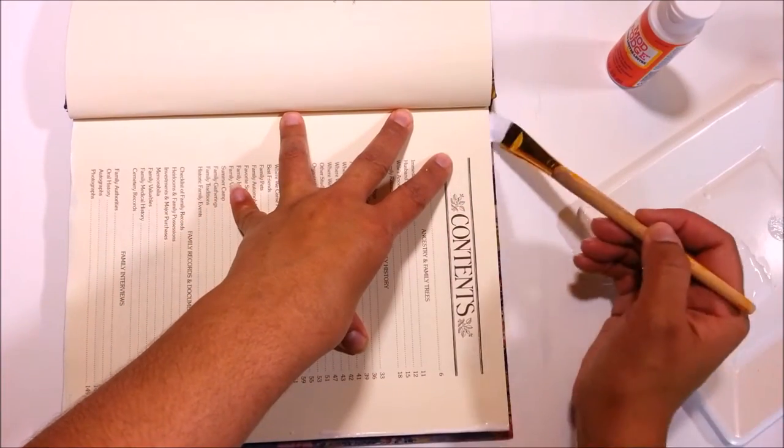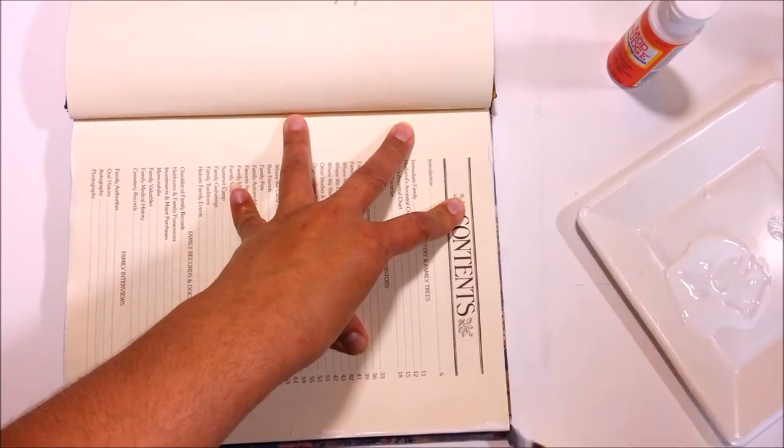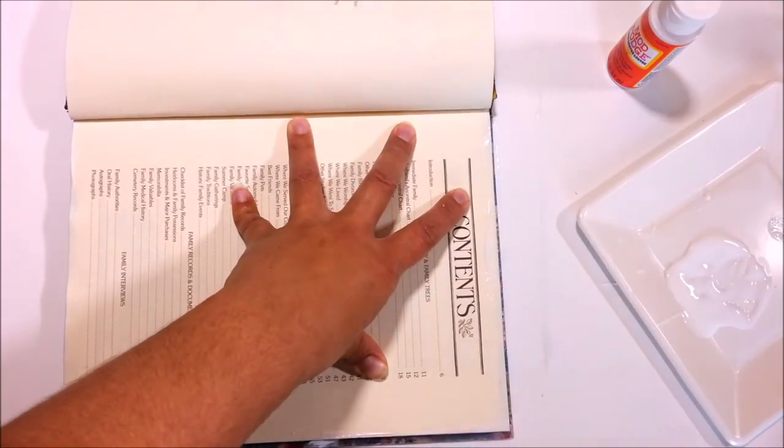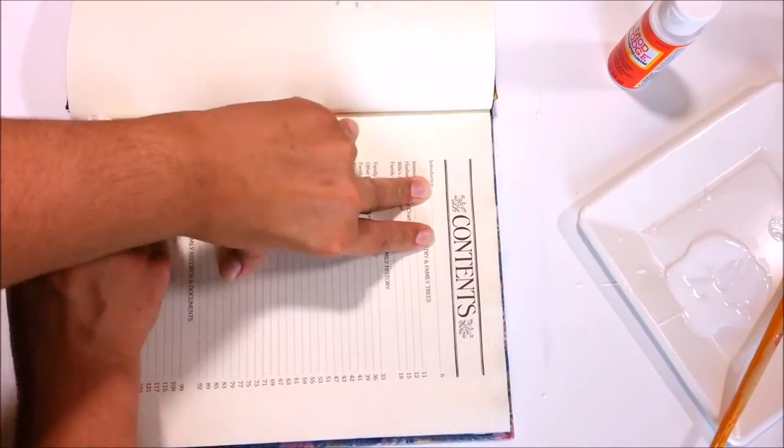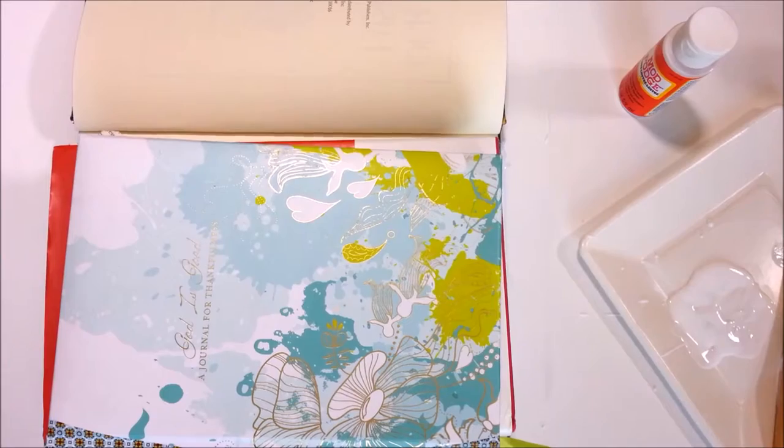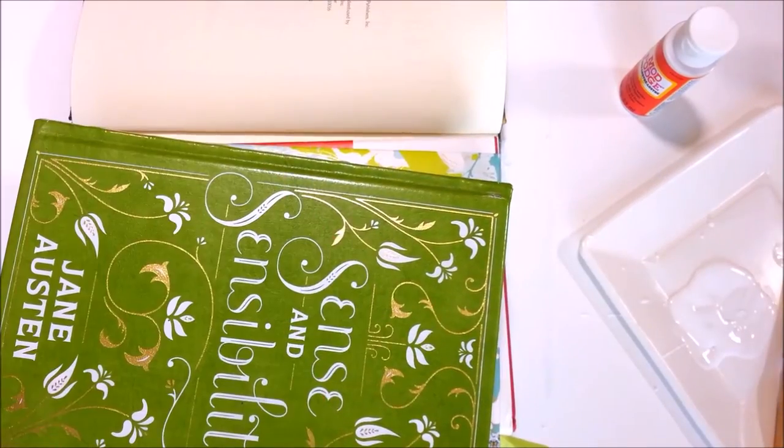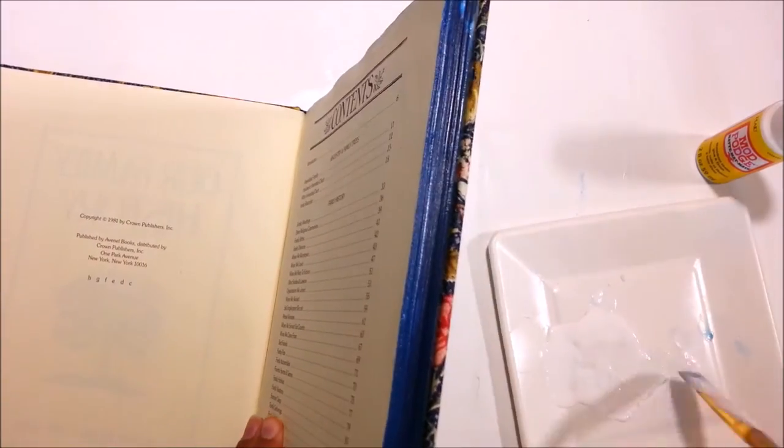My Mod Podge dries between 15 to 20 minutes, and for this book I'm going to do three very thick coats. If you make a mess, just get a napkin and clean it up before it dries. I put some books on top of it to put pressure so that it can dry.